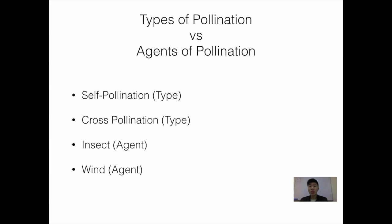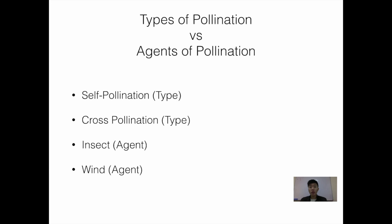When we mention agents, we mean how do insects and wind help to pollinate the flowers. When we talk about agents of pollination, we want to look at four different factors: firstly the petals, the scent of the flower, the position of the anther versus the stigma, and the size of the stigma.